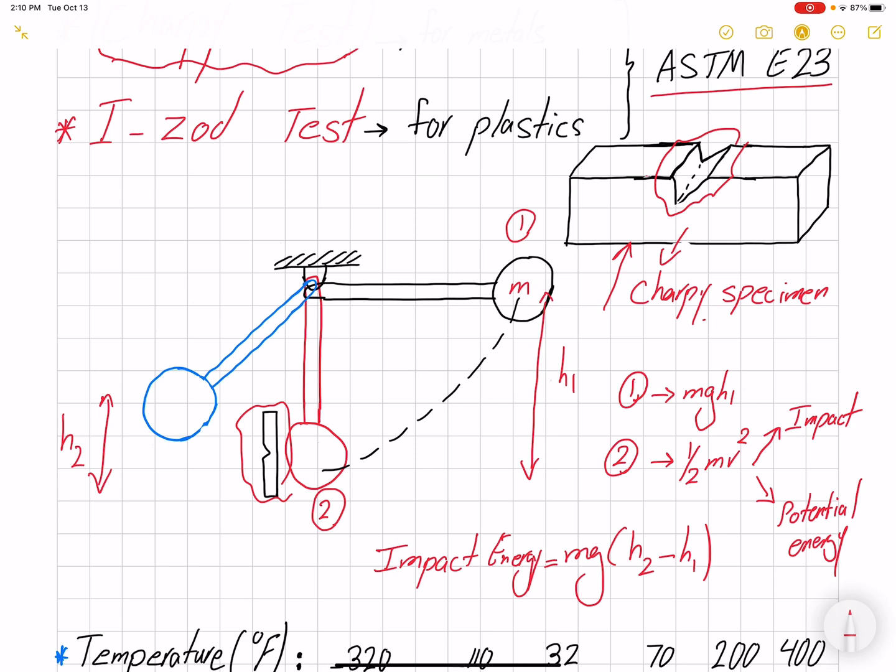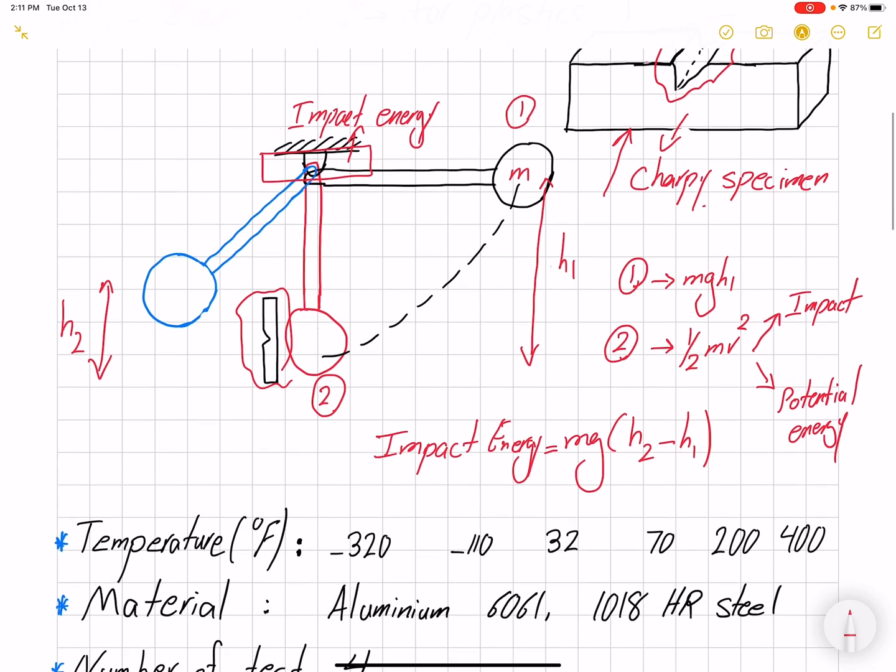In this procedure, you don't need to measure the height. The Charpy testing equipment is either digital or has an arrow that tells you the impact energy after the test, so we usually read the value to get the impact energy for different specimens.